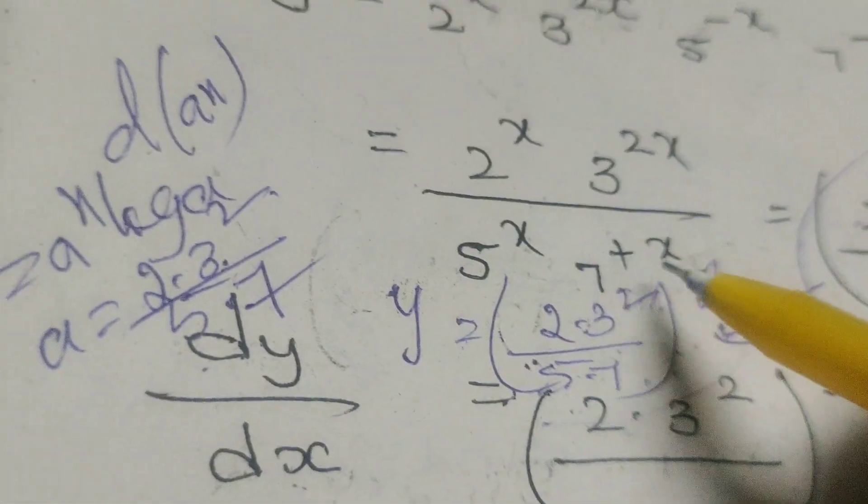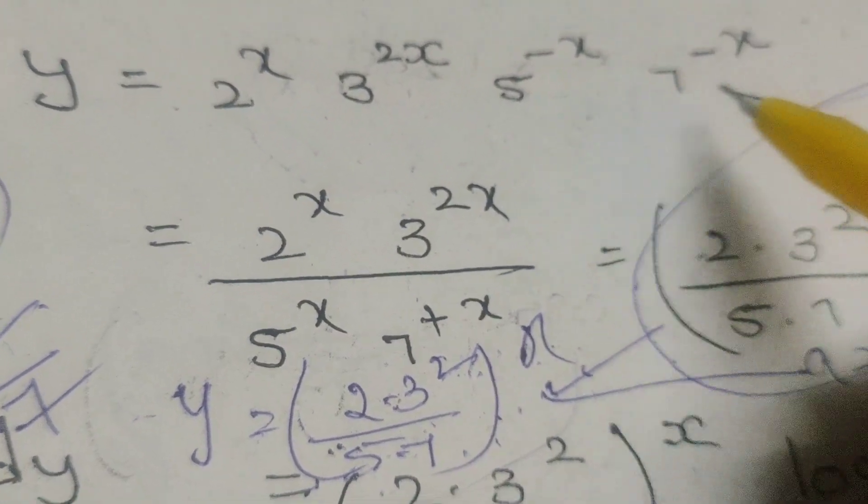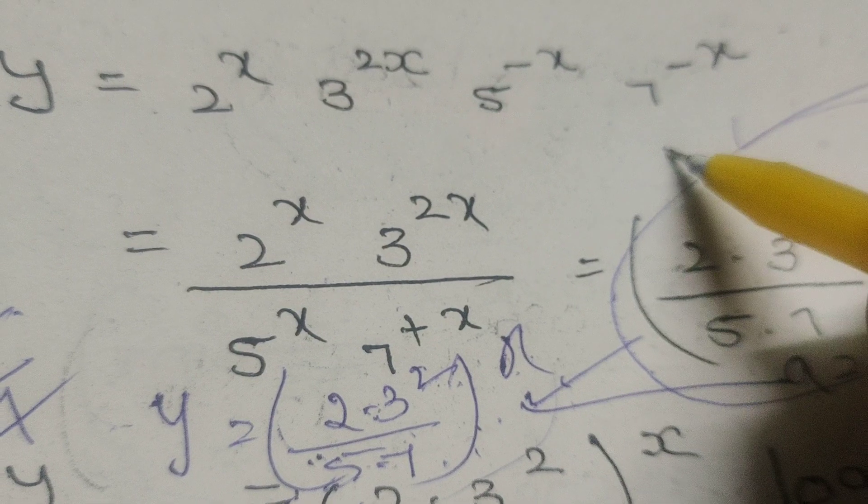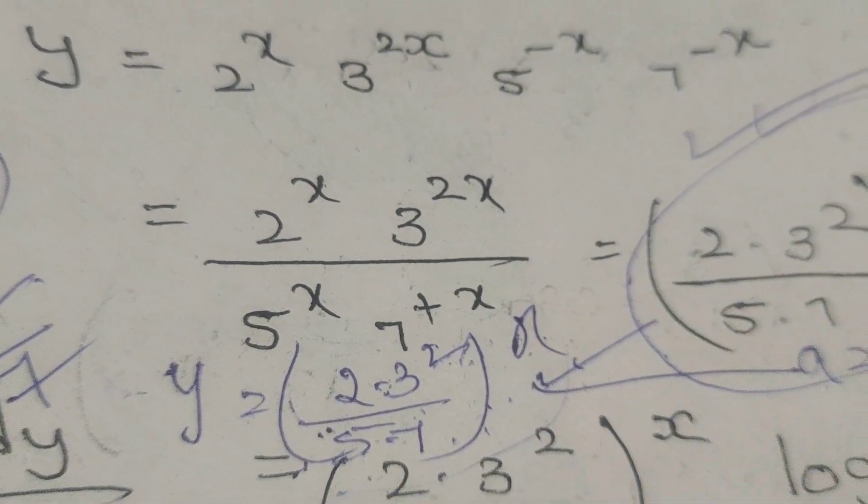This is the differentiation problem: y equals 2 power x, 3 power 2x, 5 power minus x, 7 power minus x. Thank you.